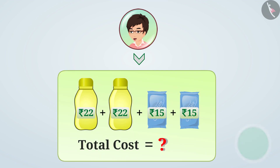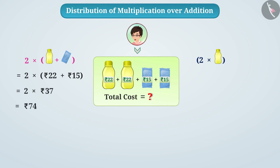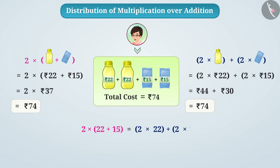You can find it in two ways: you can double the sum by adding the cost of a bottle of juice and the cost of the chocolate, or you can find the cost of two bottles of juice and the cost of two chocolates separately. In both cases you will get the same result. We can say that 2 × (22 + 15) = 2 × 22 + 2 × 15.